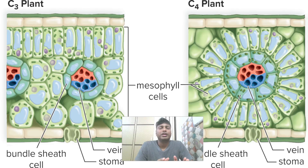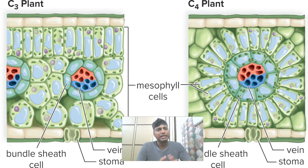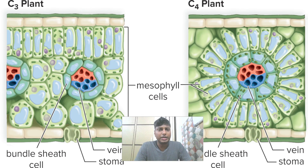What is the structural difference between a C3 plant and a C4 plant as far as their leaf anatomy is concerned? Comparing the leaf anatomy of C3 and C4 plants, in the case of C3 plants the cells of the leaves are known as mesophyll cells, and the mesophyll cells are of two types.